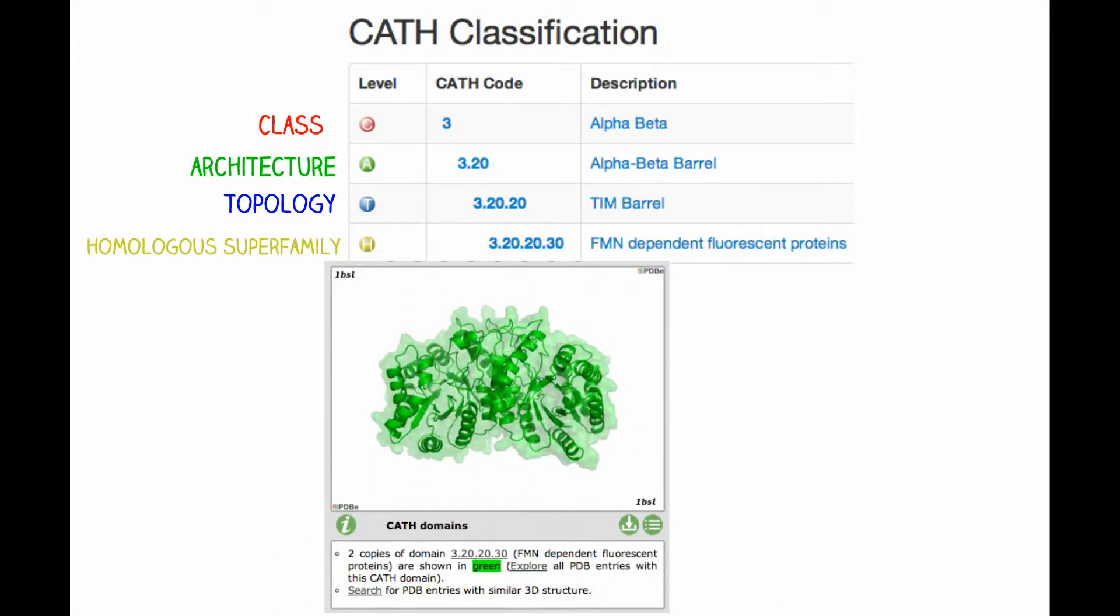Bacterial luciferase, also known as alkanal monooxygenase, is in the homologous superfamily FMN-dependent fluorescent proteins.